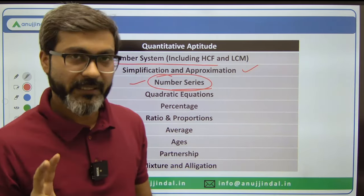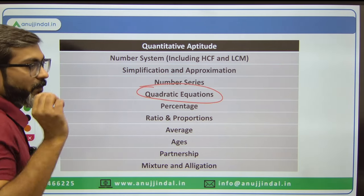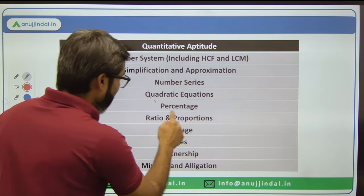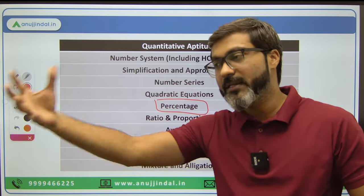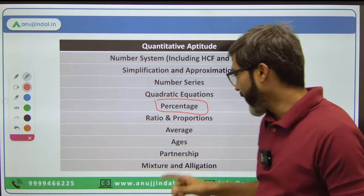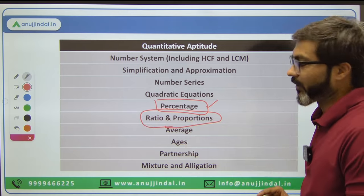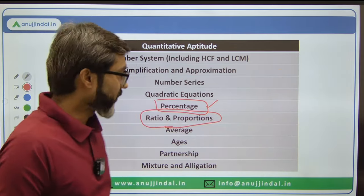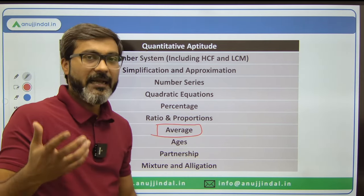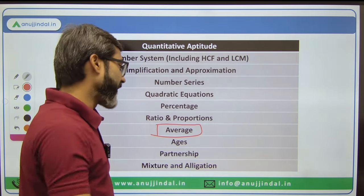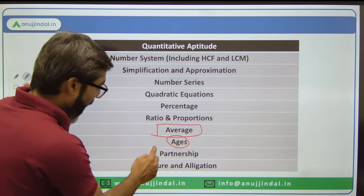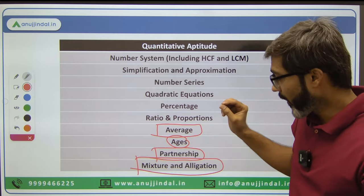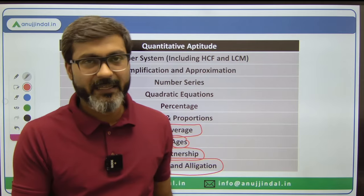Quadratic Equation is a very important topic for the RBI examination — every year they ask some questions from it. Percentage, even if not asked directly, is essential because its concept is used in solving questions from other topics. Ratio and Proportion also has many concepts that help in solving other topics. Average, Ages, and Partnership — questions from these come every year. Mixture and Allegation is one of the most important topics for Quantitative Aptitude.